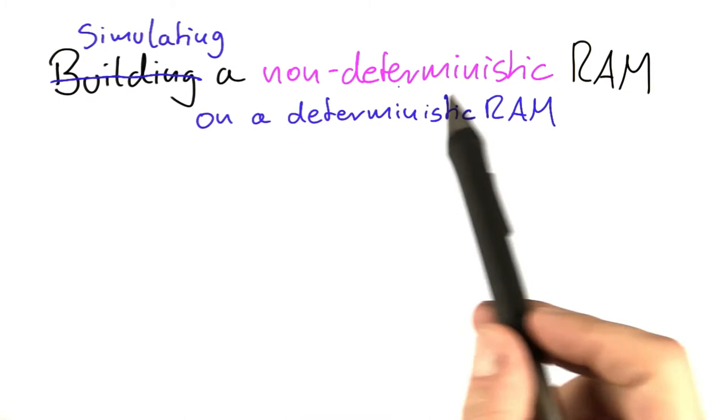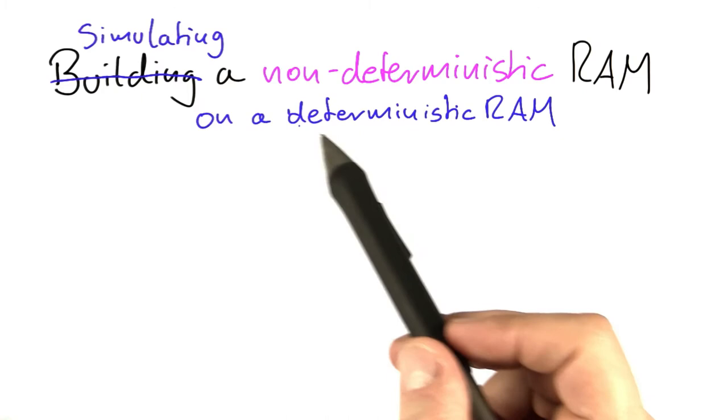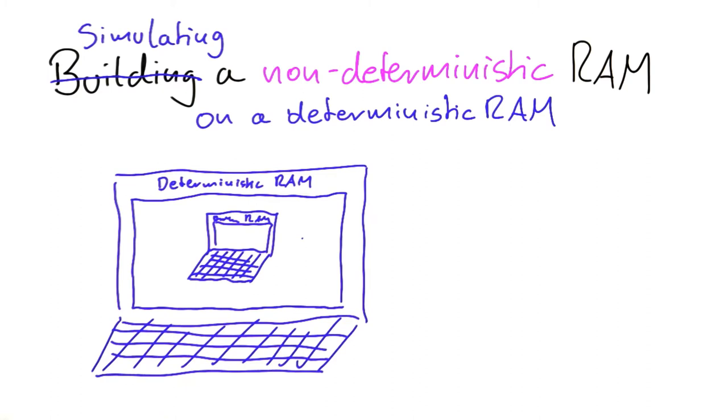So the first thing we should probably talk about when we want to simulate a non-deterministic RAM on a deterministic RAM is how we would simulate a deterministic RAM on a deterministic RAM. So basically, a picture like this,